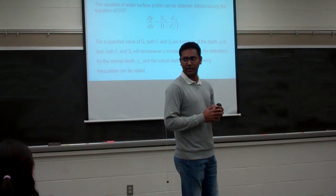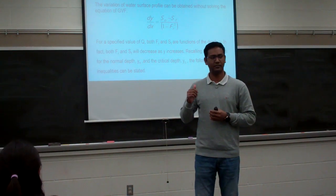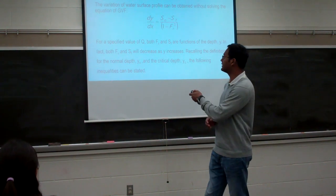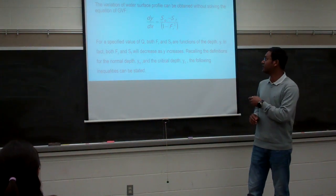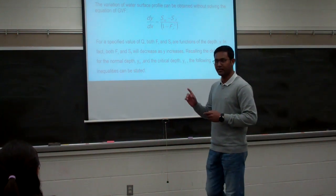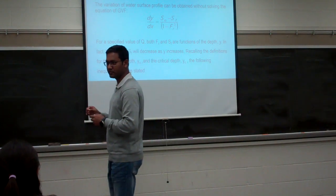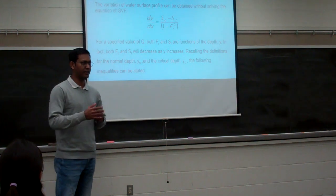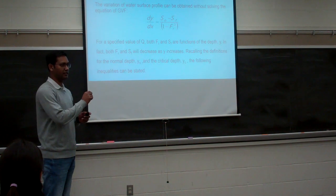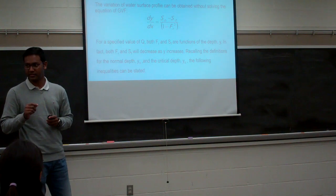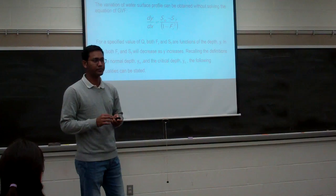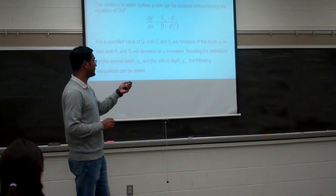So I will also rewrite this equation. What is the basic equation for Gradually Varied Flow? It is this equation: dy over dx is equal to S0 minus Sf divided by 1 minus Fr squared. S0 is the slope of the channel bottom and Sf is the slope of the energy grade line, also called friction slope.